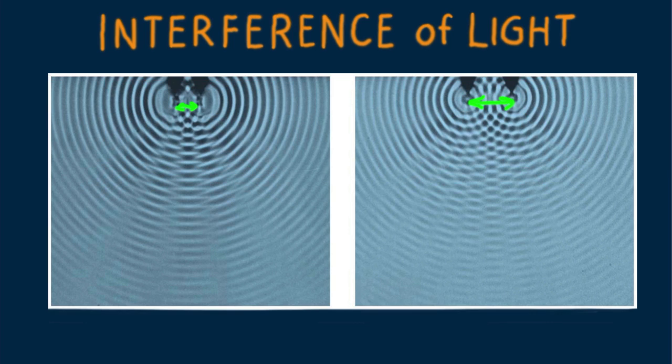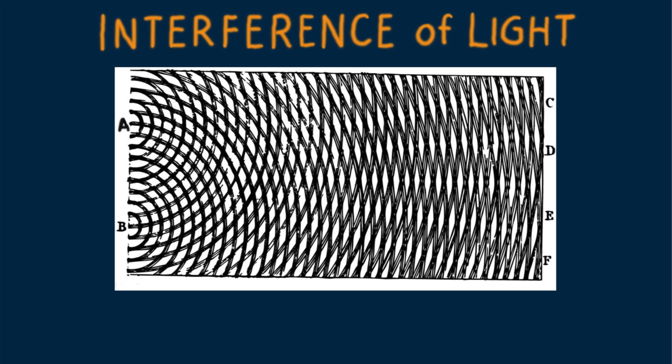Interference is a property of all waves. In 1801 British physicist and physician Thomas Young performed his now famous interference experiments with light. This is his drawing of the pattern produced by light directed through two closely spaced pinholes.